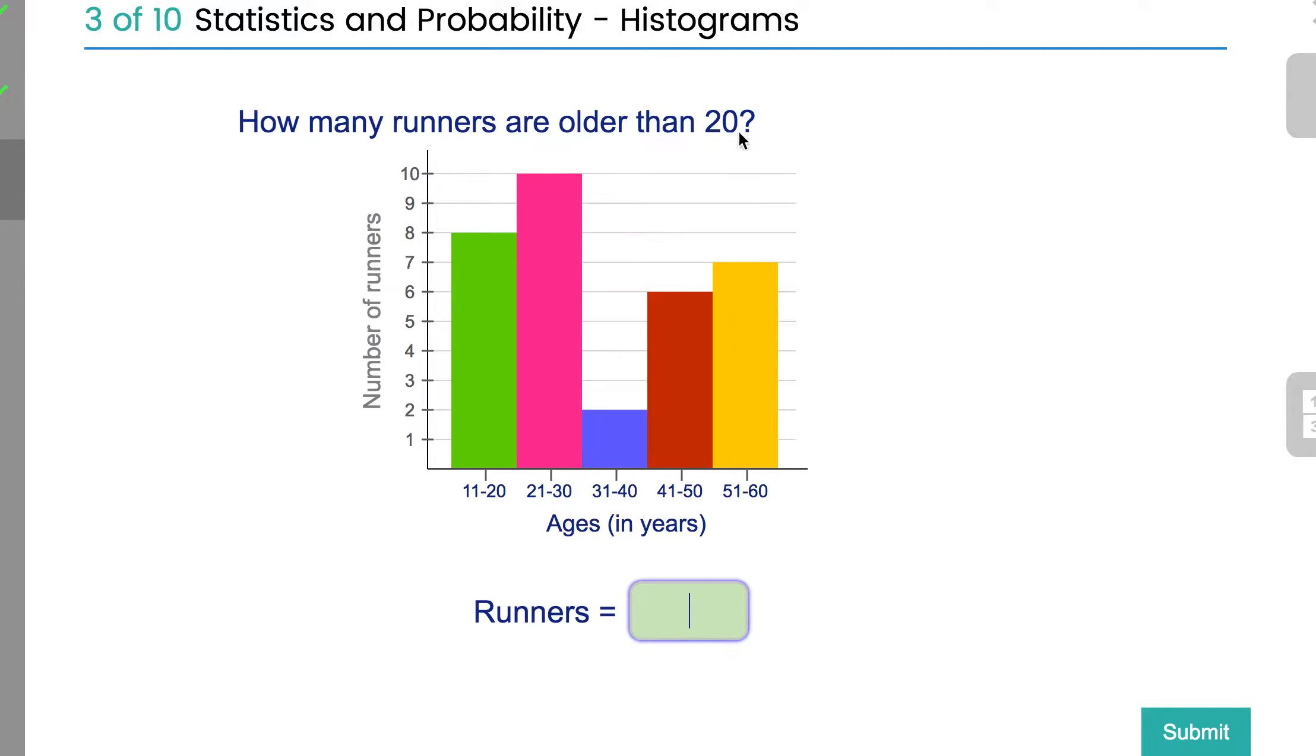How many runners are older than 20? This is where you've got to start doing a bit more combining and adding. You're going to find the ranges that are older than 20. Obviously, that's going to be these four ranges here, so you've got 10 and 2 is 12, another 6 is 18, another 7 is 25.